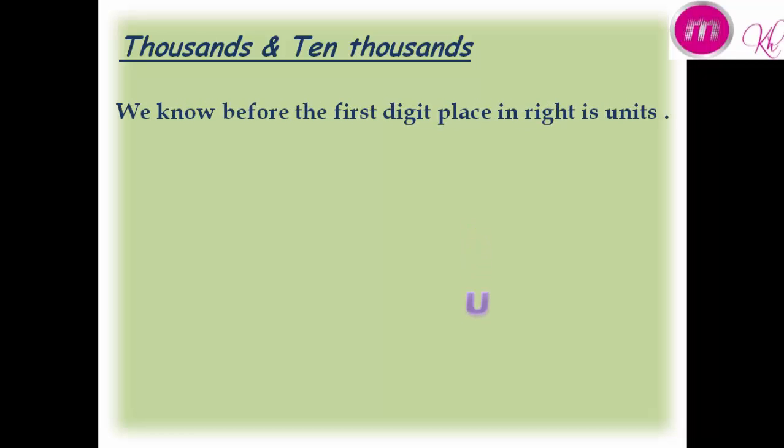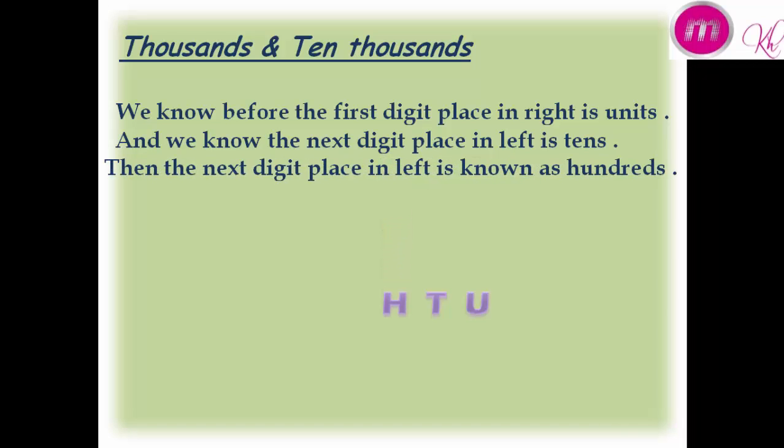We know before the first digit facing right is units, and we know the next digit facing left is tens. Then the next digit placing left is known as hundreds.